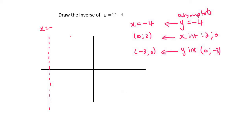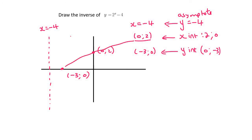Label that as x equals negative 4. Then we've got the point (0, 2), which would be here, and then (-3, 0) would be somewhere over here. And so there we can plot our graph, which will do something like that.